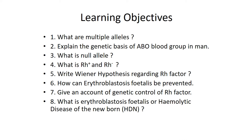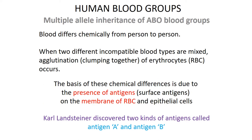Now, the learning objectives. Under this topic we are going to study about multiple alleles, the genetic basis of ABO blood group in man, what is null allele, what is RH positive and RH negative, Weiner's hypothesis regarding RH factor, erythroblastosis fetalis, genetic control of RH factor, and what is erythroblastosis fetalis or hemolytic disease.